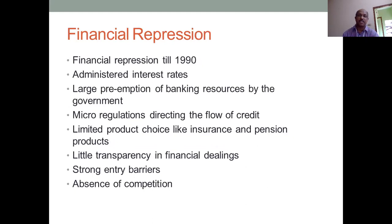What is financial repression and what are its features? Financial repression existed till 1990. There were administered interest rates — financial institutions did not have freedom to decide lending and borrowing rates, which were determined by the government. There was large preemption of banking resources by the government, more regulations, limited choices of insurance and pension, no transparency in financial dealings, strong entry barriers, licensing controls, restricted entry of other financial institutions, and absence of competition.